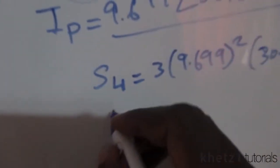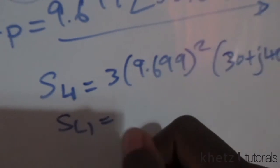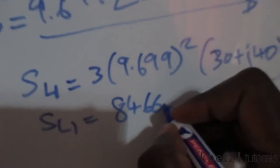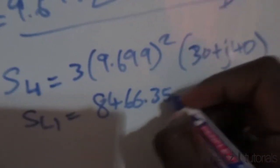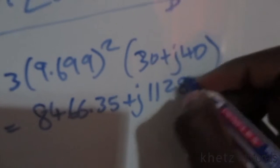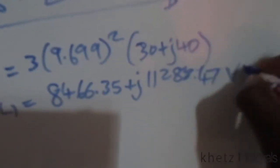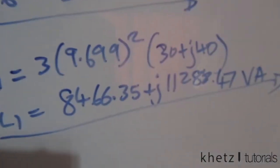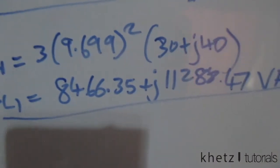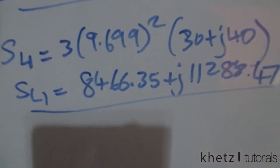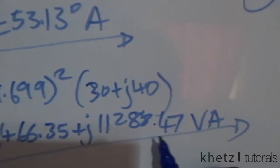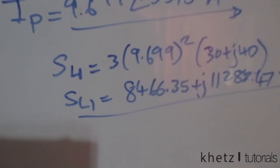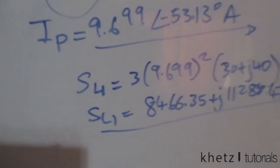This gives us the complex power associated with load one: 8466.35 plus j11288.47 VA (volt amperes). That is the complex power for load one.